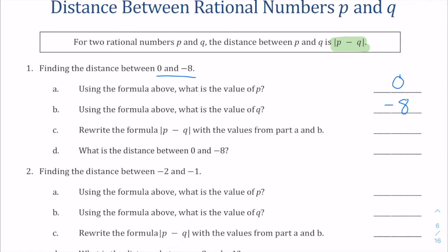So when we go ahead and plug them into the formula, we're going to rewrite that, but p is now going to be zero. The formula has a subtraction sign in it. So that came right from the formula. Now when we go to plug in q, q itself is negative eight, and then we close the absolute values.